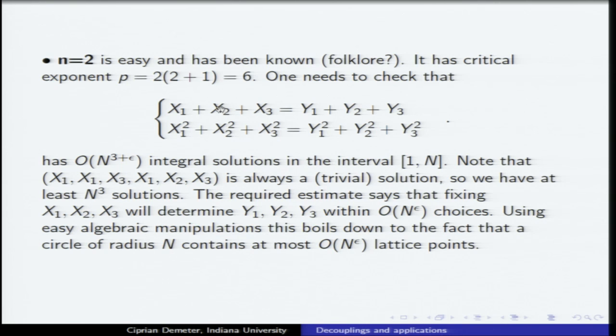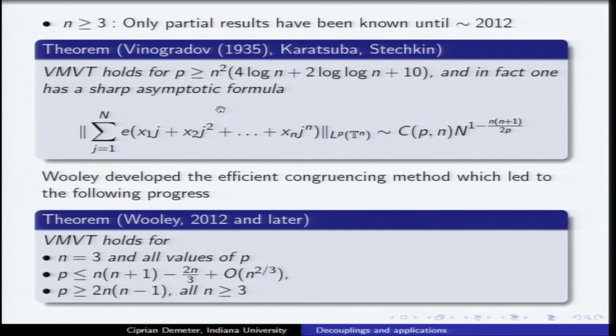So you have to do something new in higher dimensions. Until recently, only partial results were known. I mention the original work of Vinogradov, Karatsuba, and Stechkin, who proved that for p large enough in the supercritical regime you have the correct estimate and could even say something about the implicit constant. Then four years ago, Trevor Wooley developed the efficient congruencing method, leading to significant progress: he proved the theorem in three dimensions for all values of p and got partial progress in higher dimensions.